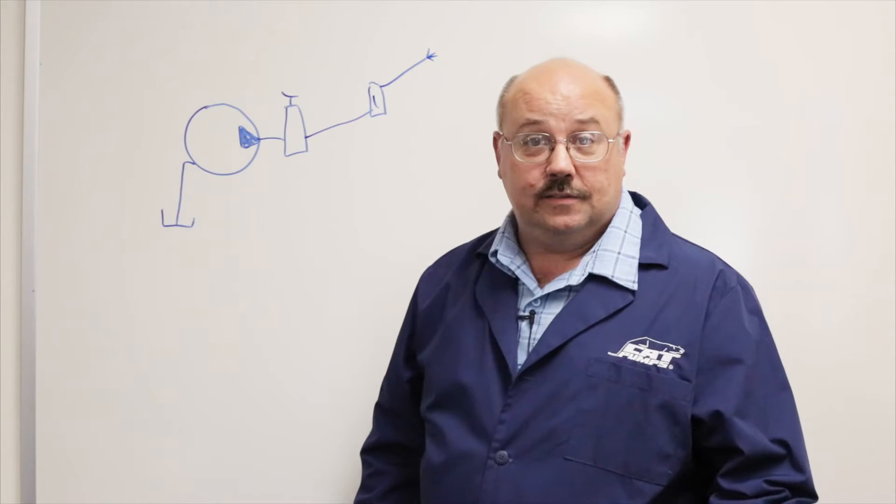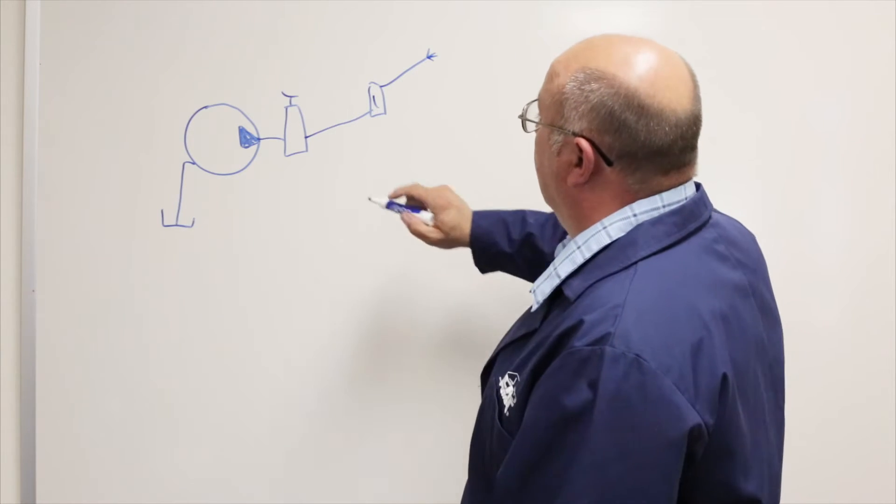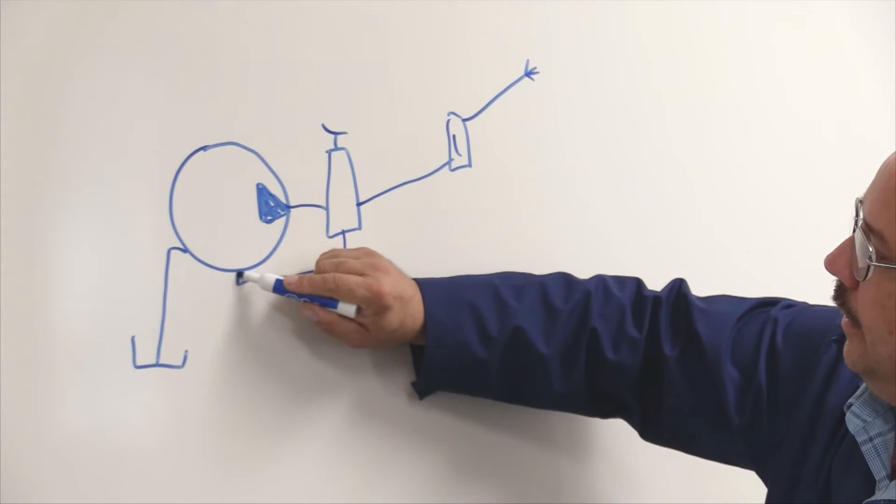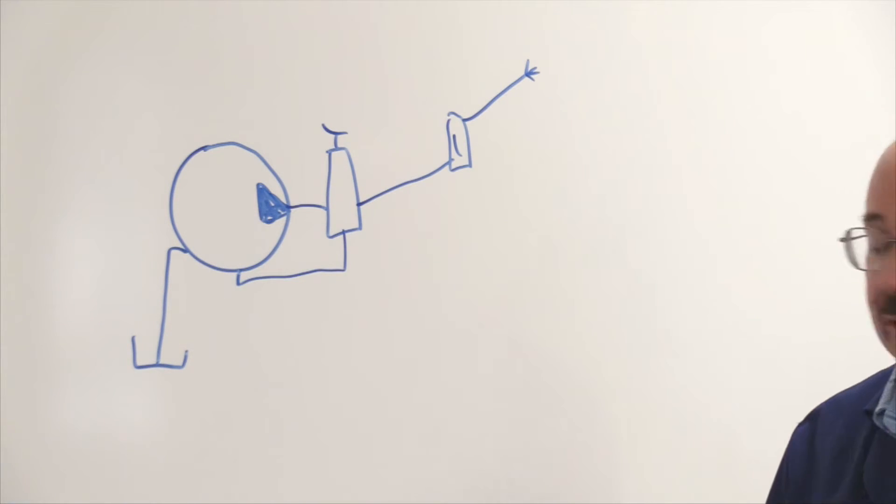The only thing I haven't drawn yet is the bypass line. Because typically this bypass comes out of the unloader and heads back into the pump in its alternate inlet port.